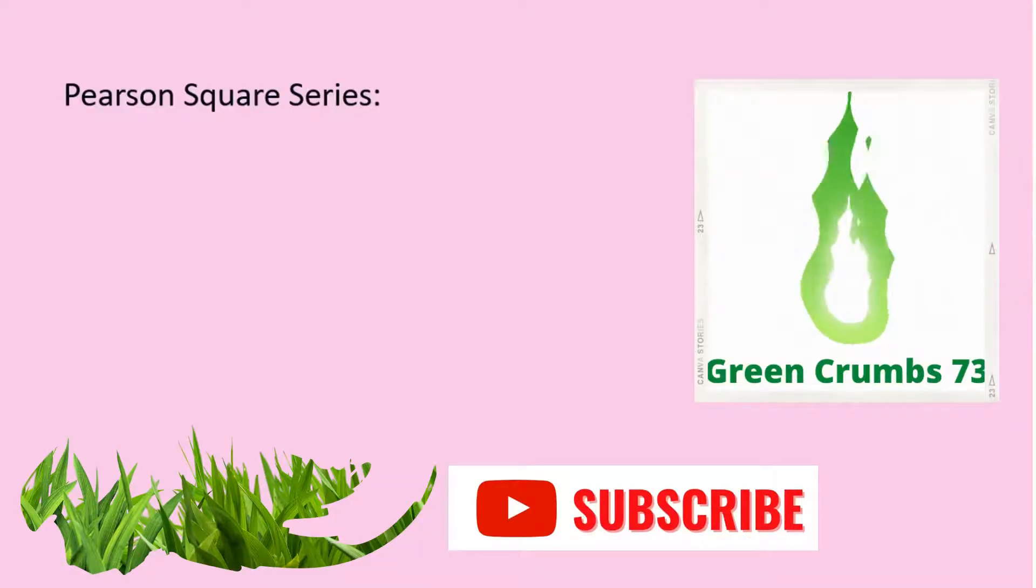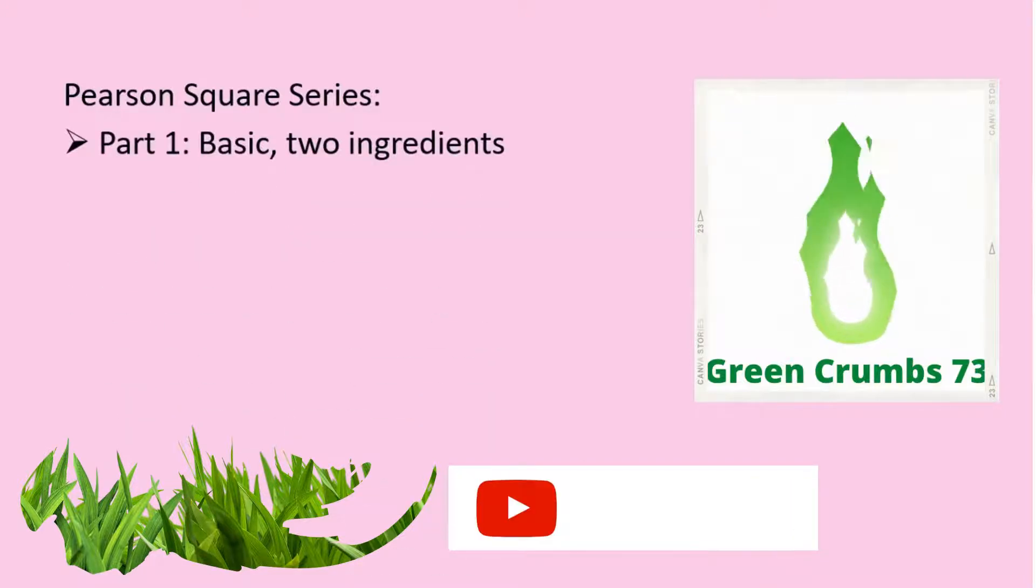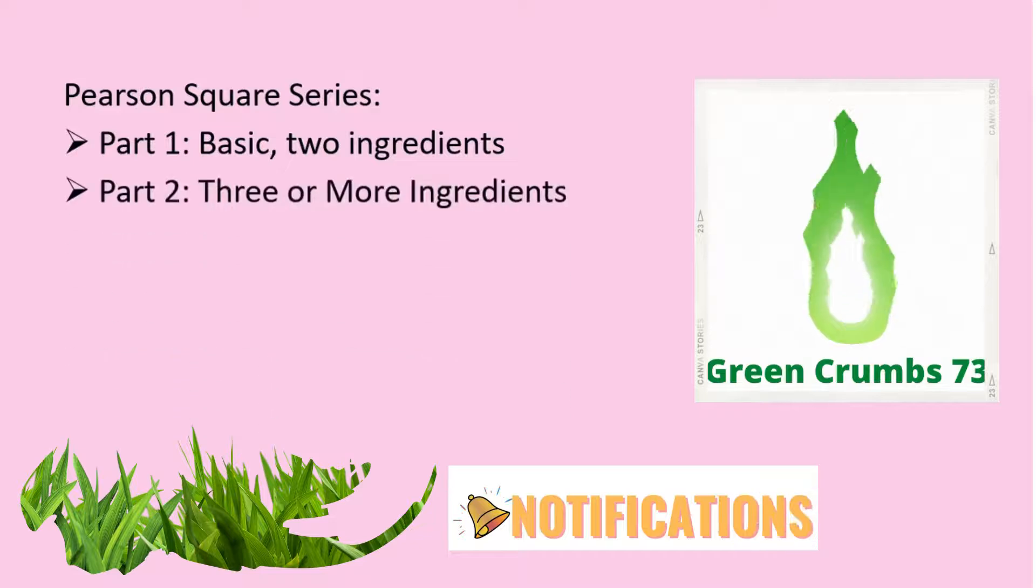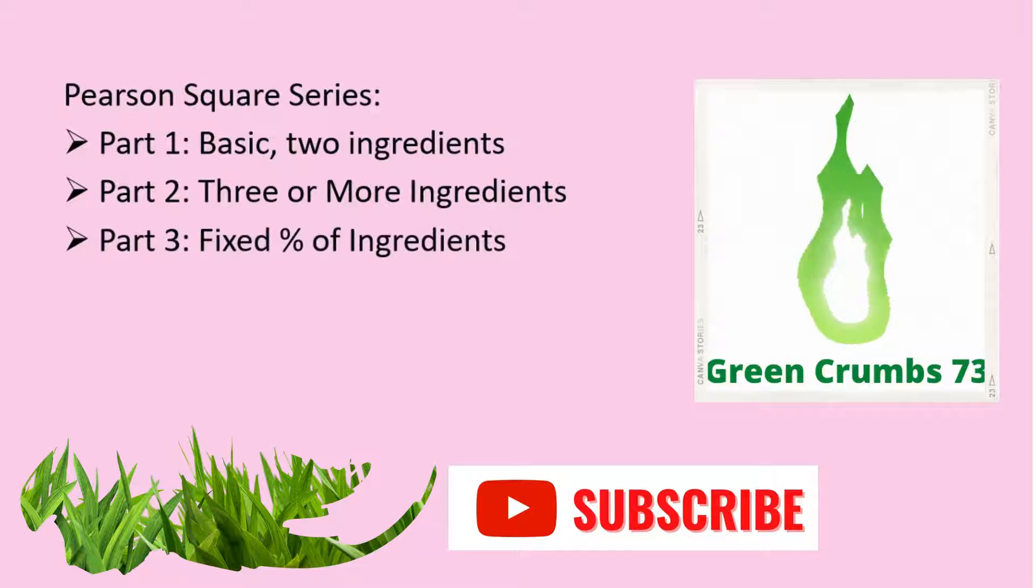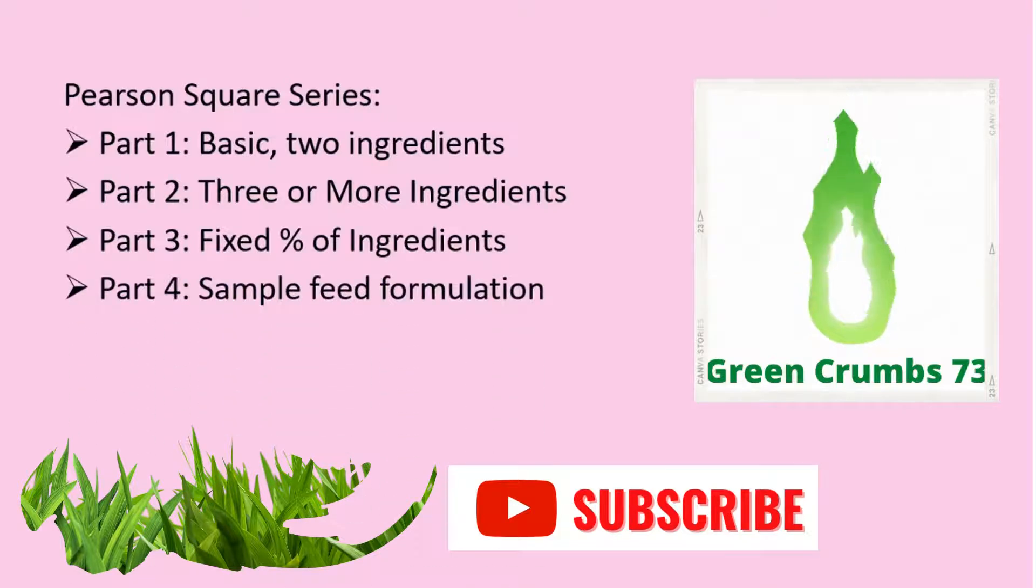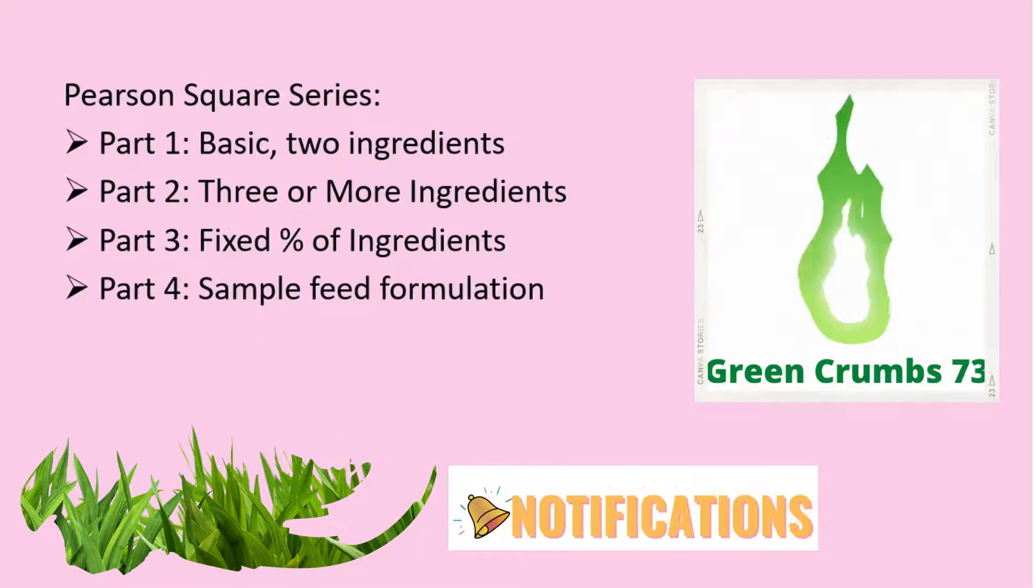In the first video we will cover the basics of Pearson Square method in formulating diets with two ingredients and one nutrient. In the second video we will show you how to use Pearson Square if there are three or more ingredients to be used. The third video will discuss how to calculate a diet if you will use a fixed percentage of one or more feed components, and finally in the fourth video we will formulate a representative ration for ruminants such as cattle, goats, and sheep.